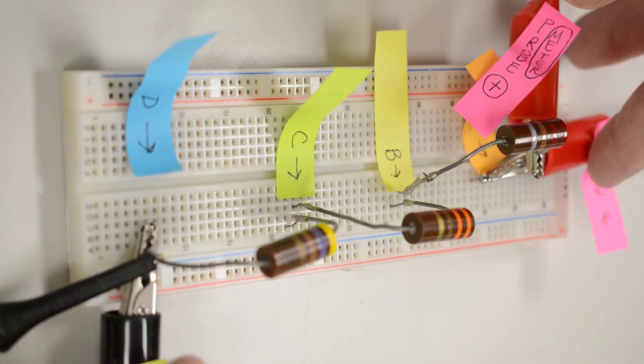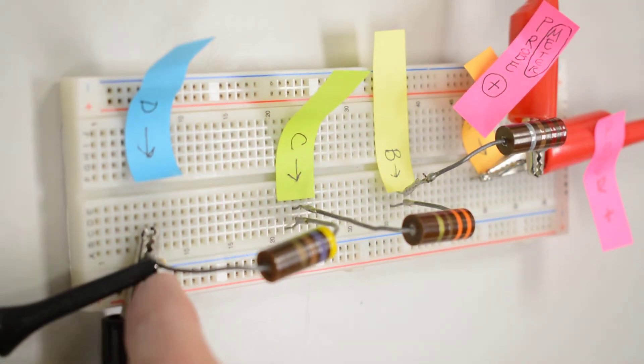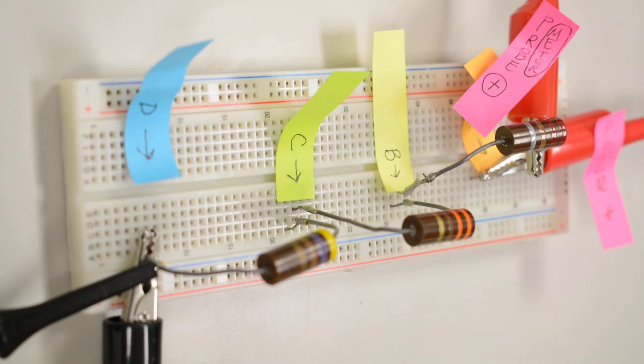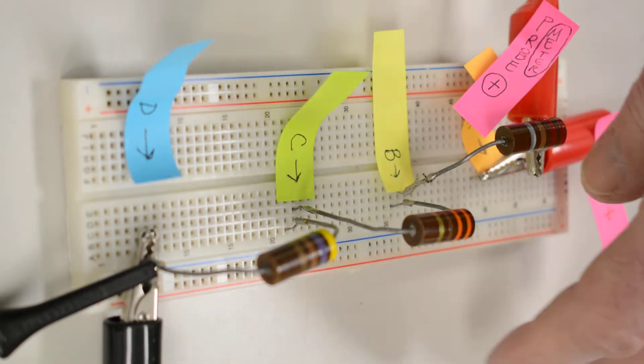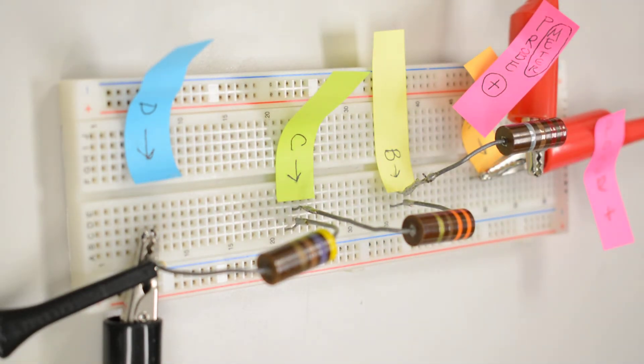So these two alligator clips here, positive red and negative black, those are my power supplies from my lambda power supply that we looked at earlier. Those probes do not move. That's supplying power to my circuit, and it does not need to move.